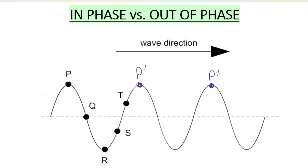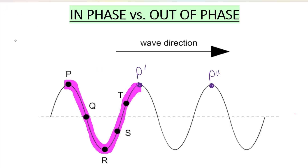They're both on the peaks, the crests of the waves, so those are in phase. Now if I ask you to find a wavelength, it'll either be between this P and that P, or the second wavelength would be between this P and that P. Between our first P and our last P, how many waves do I have? Those are points in phase — connect them, that's one wavelength. That's a second point in phase — connect them, that's our second wavelength. So two waves.